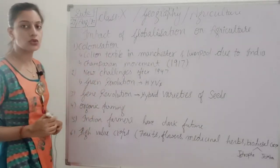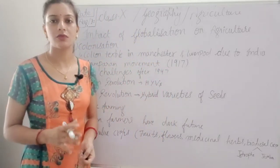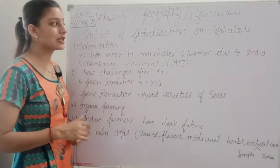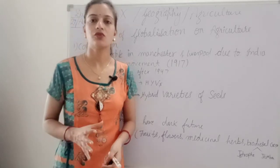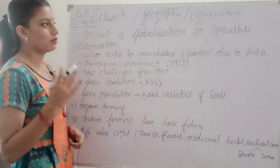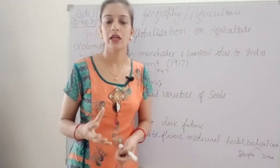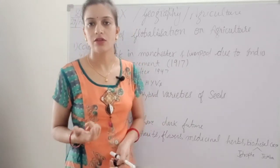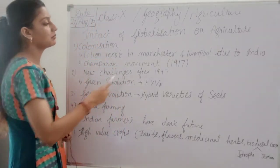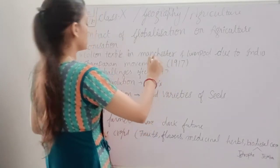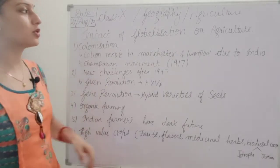Colonization means the British rule. At the time of British rule, the condition of India was not good because they were pressurizing the people to cultivate indigo plantations, as a result of which the land lost its fertility. Indigo was the main crop required by the industries of England. Manchester, famous for cotton textiles, and Liverpool were established because of India.